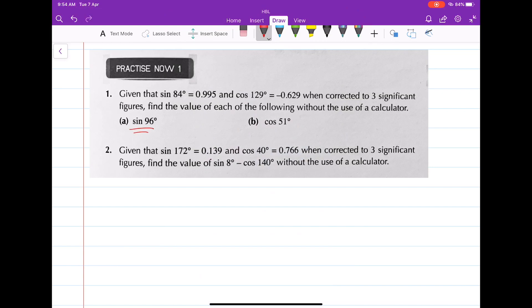And what you're given is the sine of 84 degrees, which is 0.995. Now, the relationship between this 96 degrees and 84 degrees is the fact that when you add them together, you'll get 180 degrees.